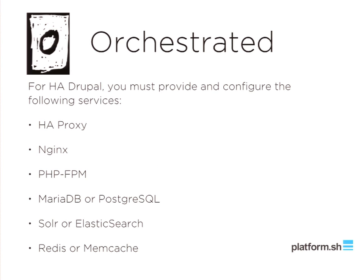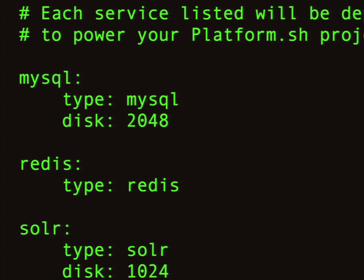Orchestrated also means, in the case of Drupal, if you want high-availability websites — which are a must these days for any business-critical application — then you need things like HAProxy, Nginx, PHP-FPM, MariaDB, Postgres in a cluster configuration, Elasticsearch with triple-redundant nodes, Redis, Memcache for caching. As you see from the alphabet soup and the number of services, even before you get into esoteric stuff like MongoDB or an OJS, or PostgreSQL, orchestrating this really becomes a big challenge.